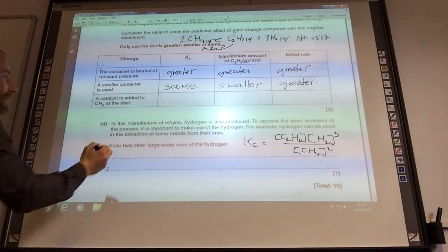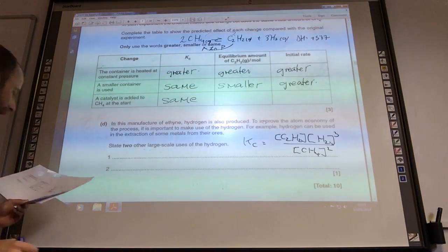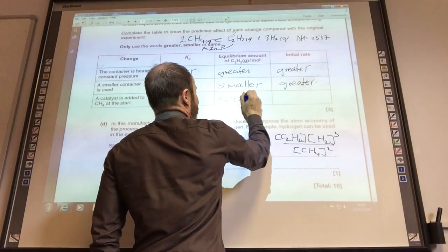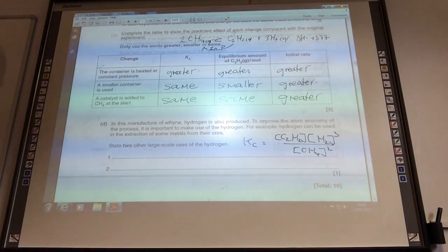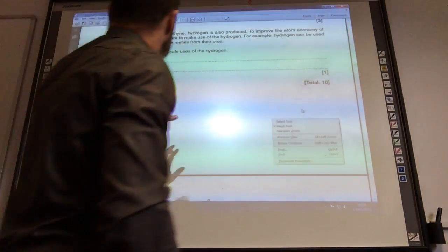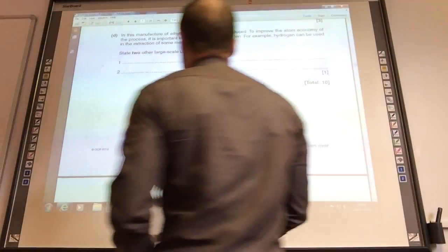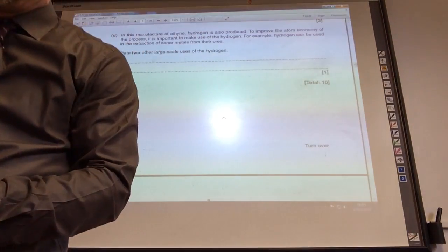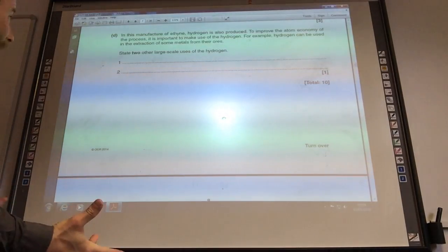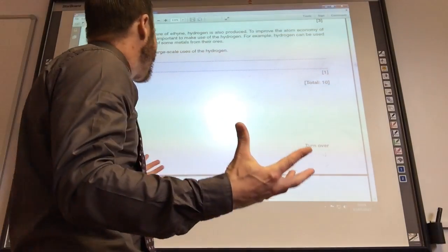A catalyst is added. Kc not affected by a catalyst. Equilibrium amount, again not affected by a catalyst. And rate we know is affected by a catalyst and will be greater. Finally then for this question, in the manufacture we also produce hydrogen. How can we use hydrogen? Okay, hydrogen, well you would have done fuel cells. So obviously at A2, fuel cells come up. You probably remember manufacturing margarine from AS Chemistry with the alkenes, and the main one that most people mention.